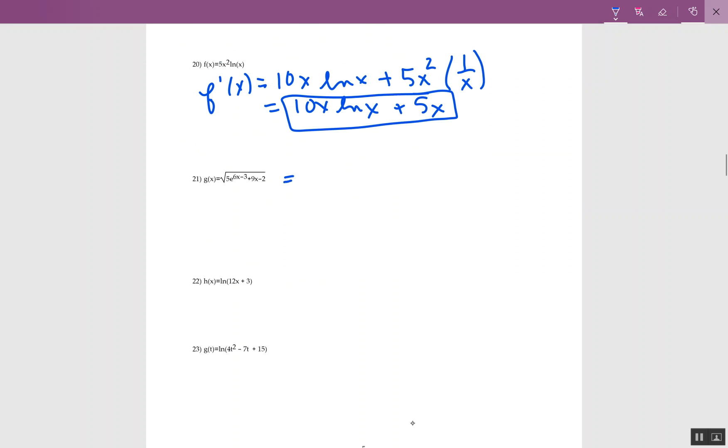Number 21, again, is a chain rule. It's what I would call chain-chain. Because the square root is the first chain. That's the generalized power rule. But I also see the e inside with the 6x minus 3, so there's a second chain.